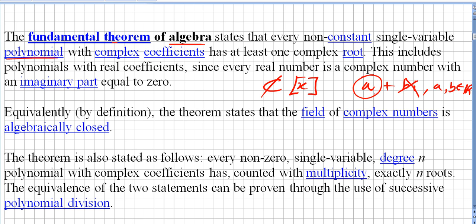So this includes also the real numbers. By definition, the theorem states that the field of complex numbers is algebraically closed. Every single polynomial will have a zero here in the field of the complex numbers.